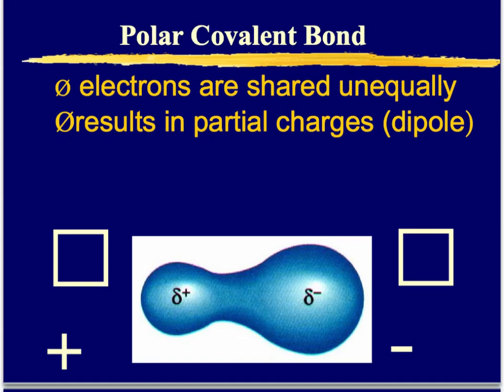A classic example of a polar covalent bond is hydrogen and chlorine. Hydrogen is on the left-hand side of the periodic table, so it has low electronegativity. Chlorine is on the right-hand side, so it has high electronegativity. It makes sense that chlorine is going to be pulling those electrons more away from hydrogen.